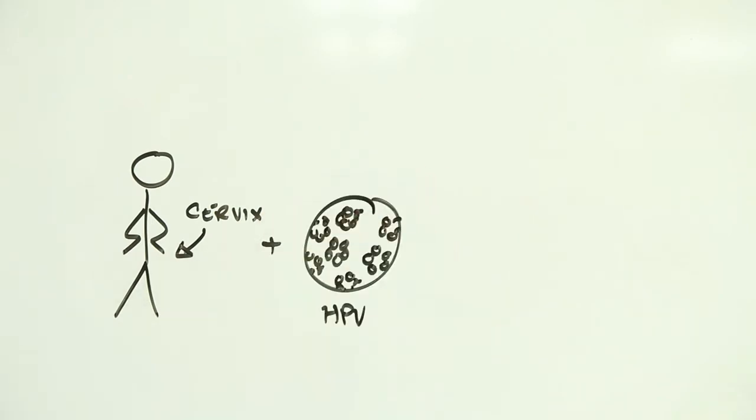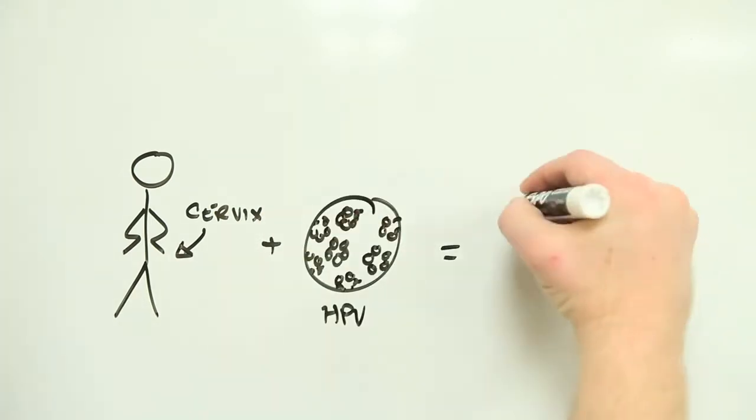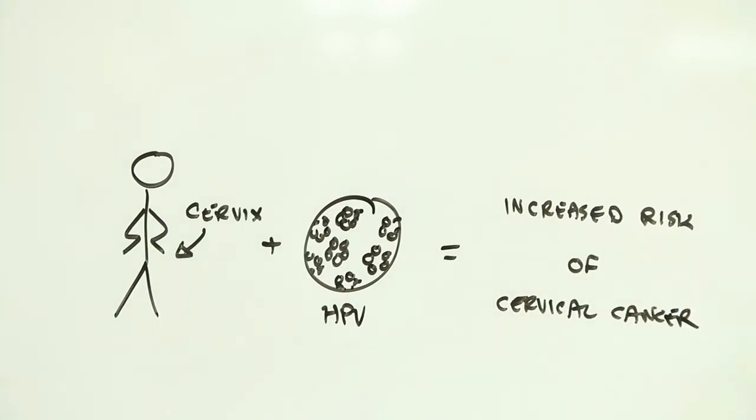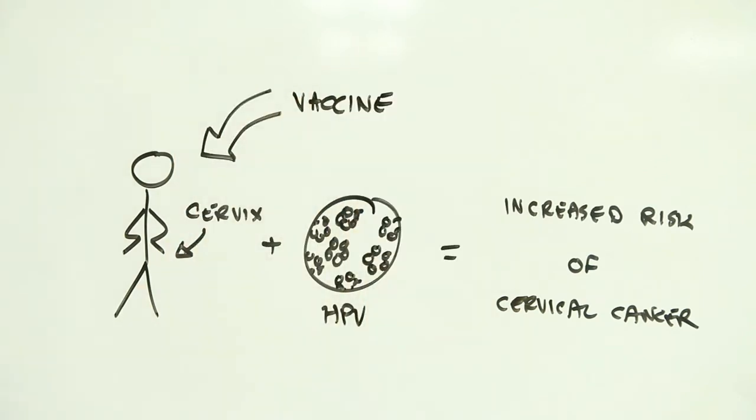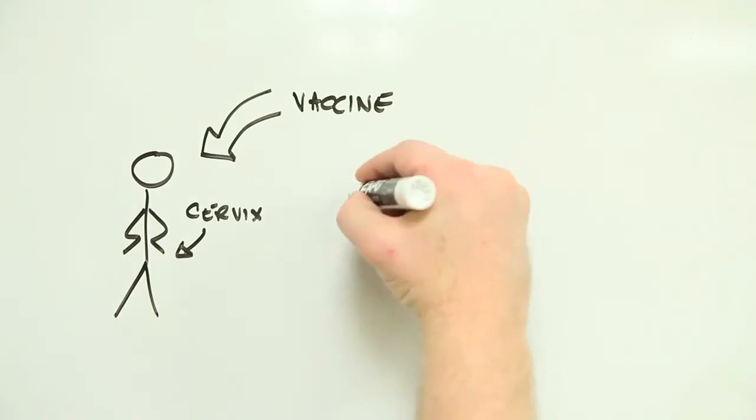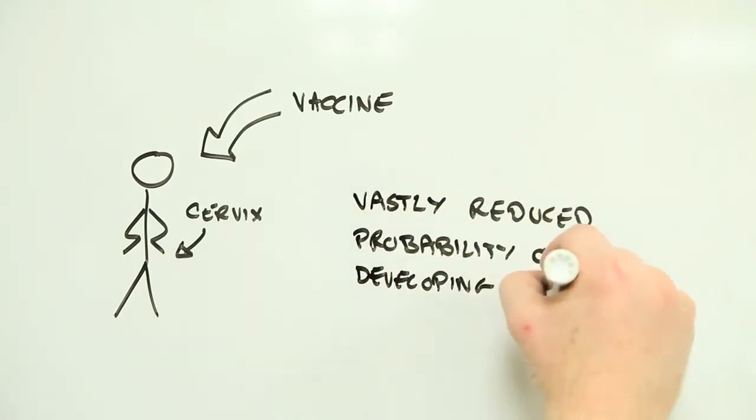Take cervical cancer, for instance. Virtually all cervical cancers are caused by a virus, the human papillomavirus, more commonly known as HPV. And where there's a virus, there's the possibility of training the body to block it by using vaccines. In other words, cervical cancer could be prevented in principle by a simple series of shots.